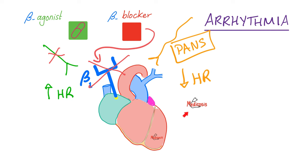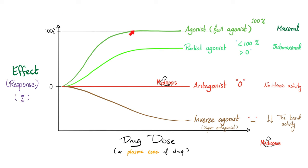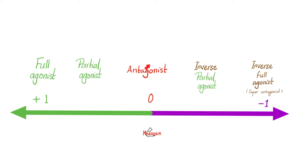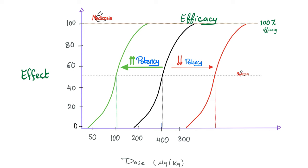A full agonist gives you 100% of the desired effect. A partial agonist gives something between 0 and 100%, say 50%. An antagonist gives you 0 — no effect, not a negative number. If you want something that causes the opposite effect, it's called an inverse agonist or super antagonist — that's a negative value. So: full agonist is +1 (100%), partial agonist is between 0 and +1, inverse partial agonist is between 0 and −1, and inverse full agonist or super antagonist is −1. To learn about efficacy and potency, refer to my video titled Pharmacodynamics in this pharmacology playlist.